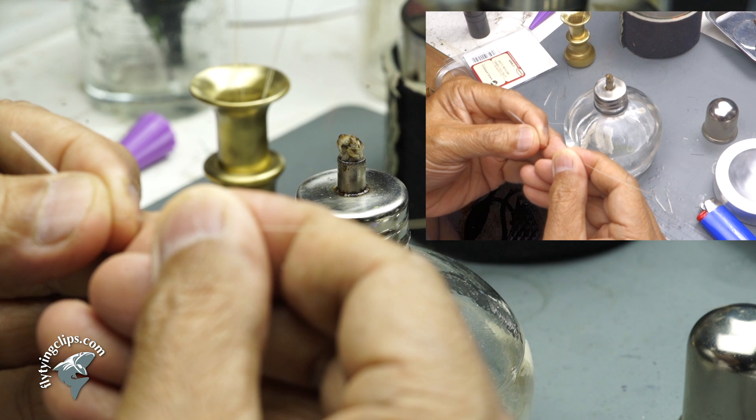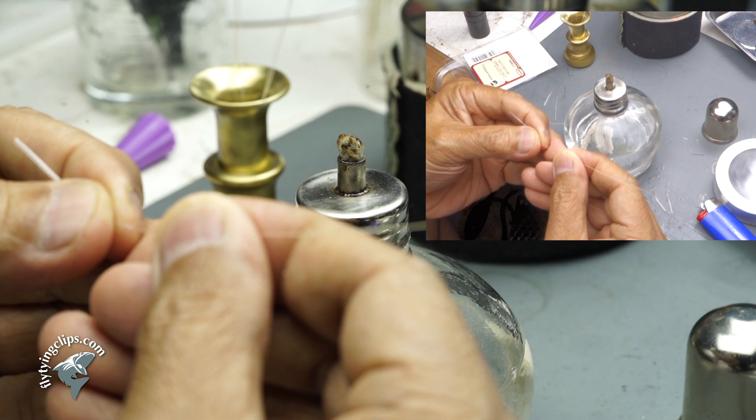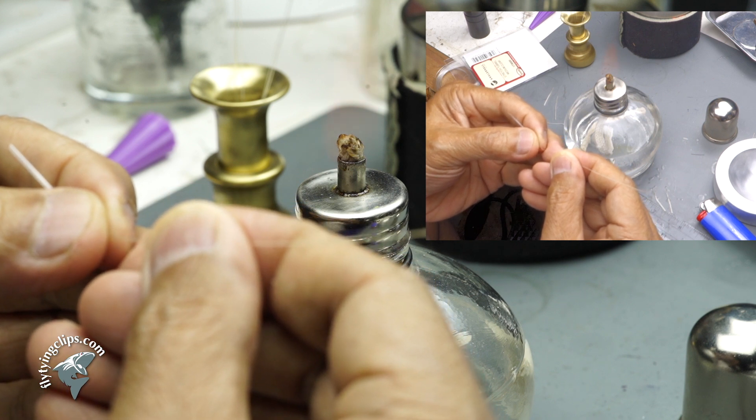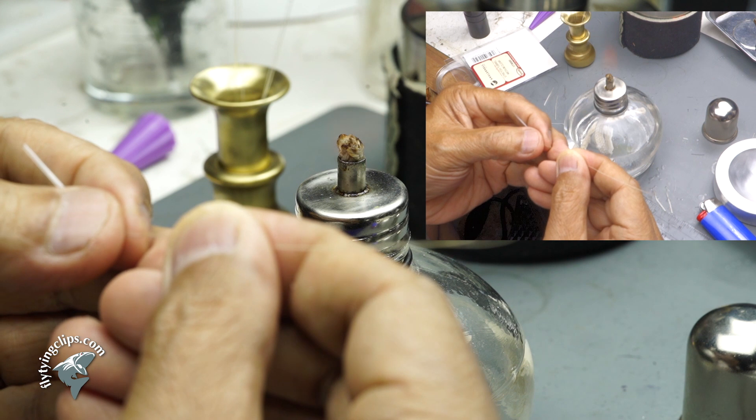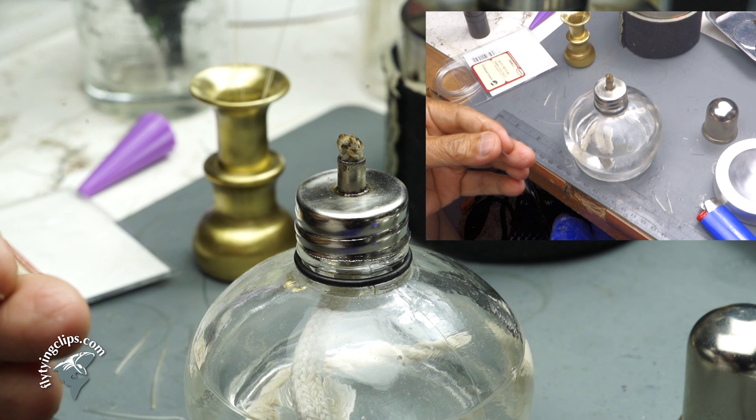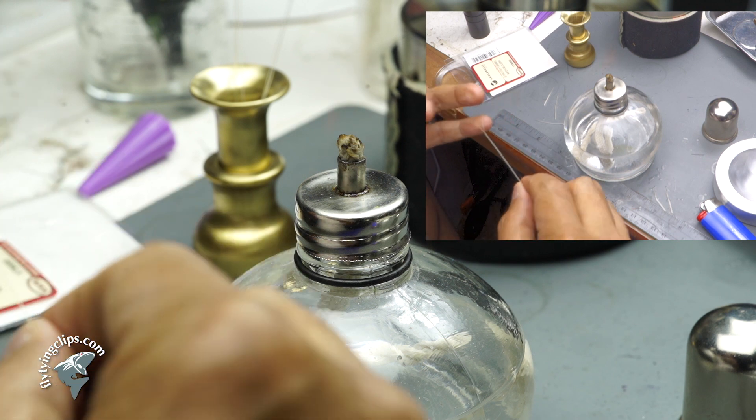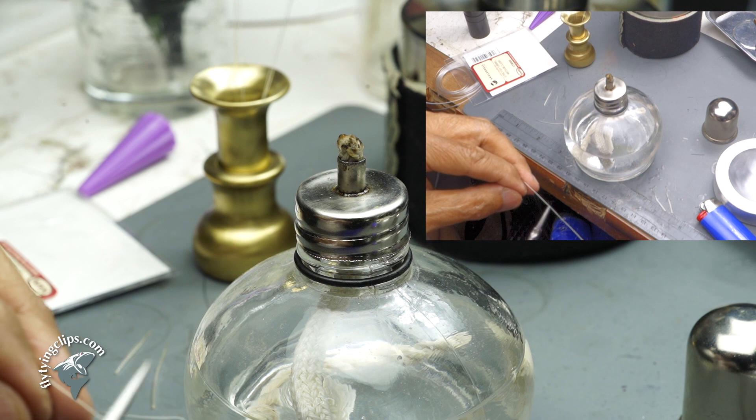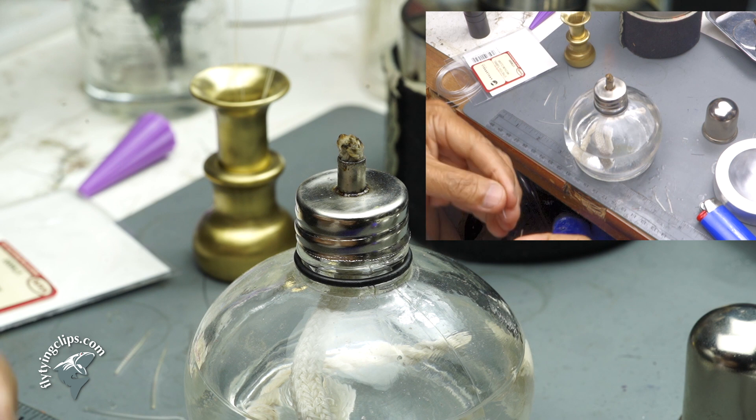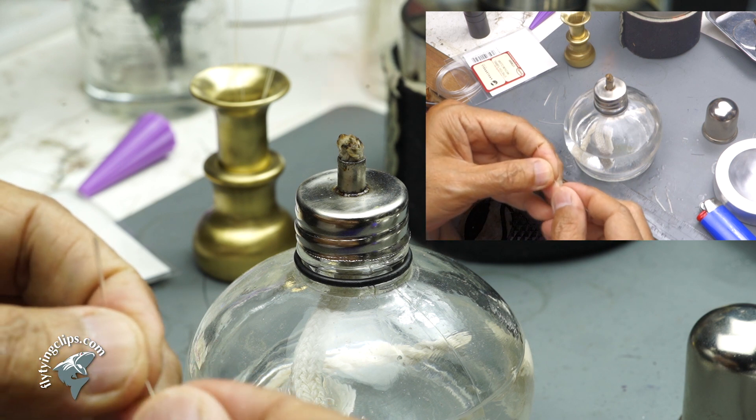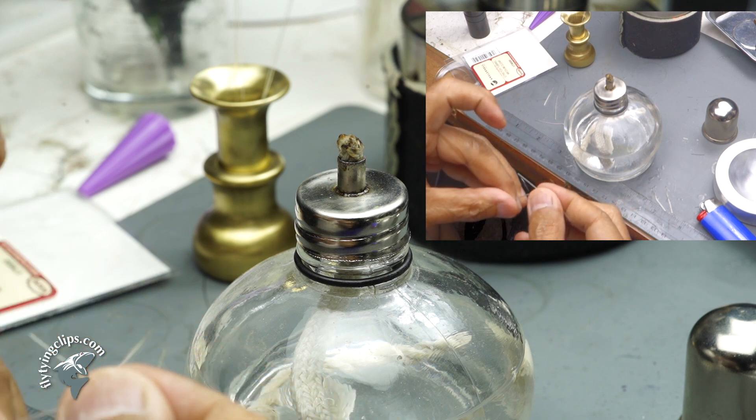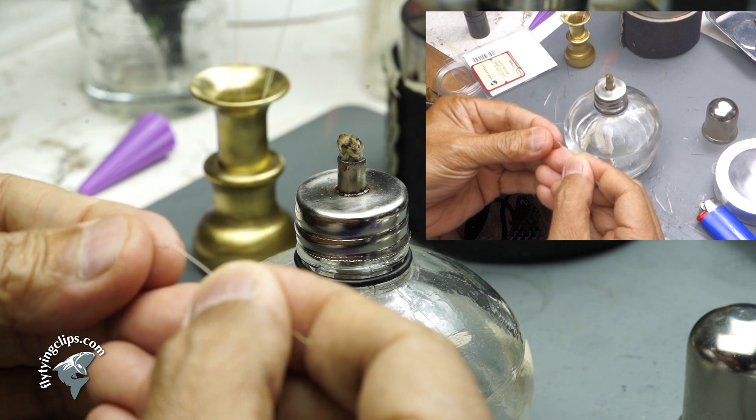The boar bristle gets thinner as it moves towards the end. See I've trimmed it off. Now that's a thinner portion. I'm inserting it into the tapered end.